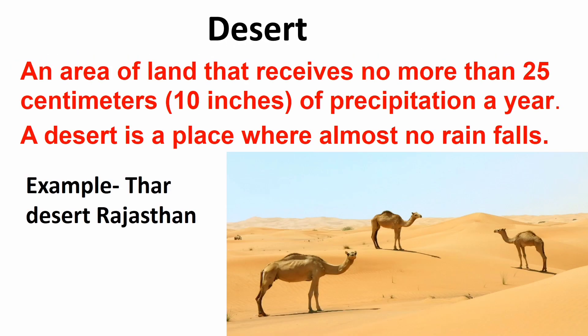Desert: An area of land that receives no more than 25 cm of precipitation a year. A desert is a place where almost no rain falls. Example, Thar Desert, Rajasthan.